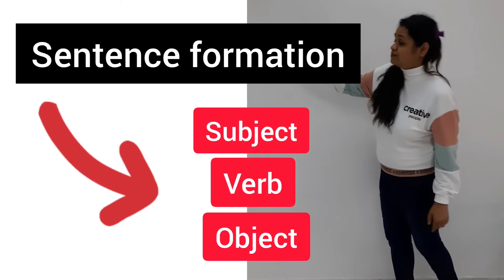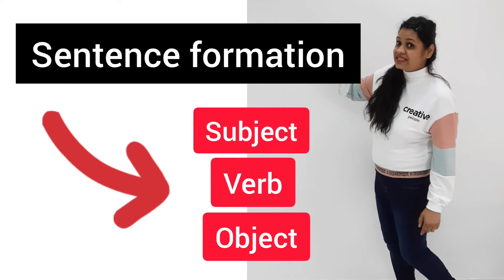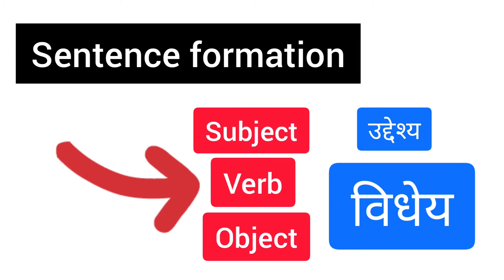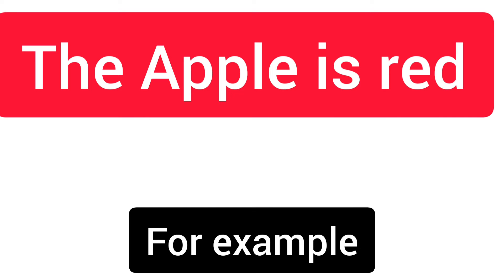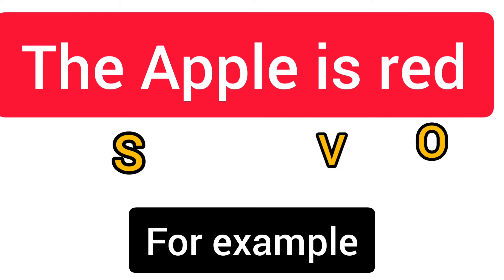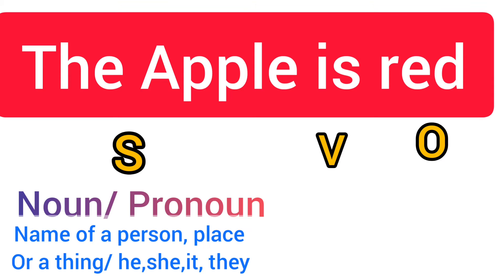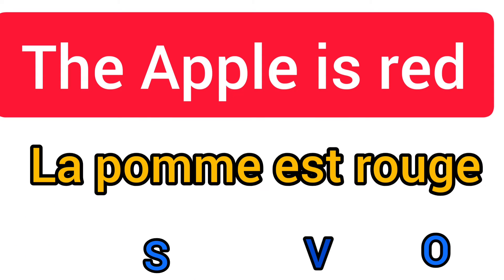First is subject, second is verb, and third is object. For example: 'The apple is red.' A little review of English — 'the apple' is your subject, 'is' is your verb, and 'red' is your object. The subject could be a noun or pronoun — it means sangya or sarvanaam. Now we will see this in French.